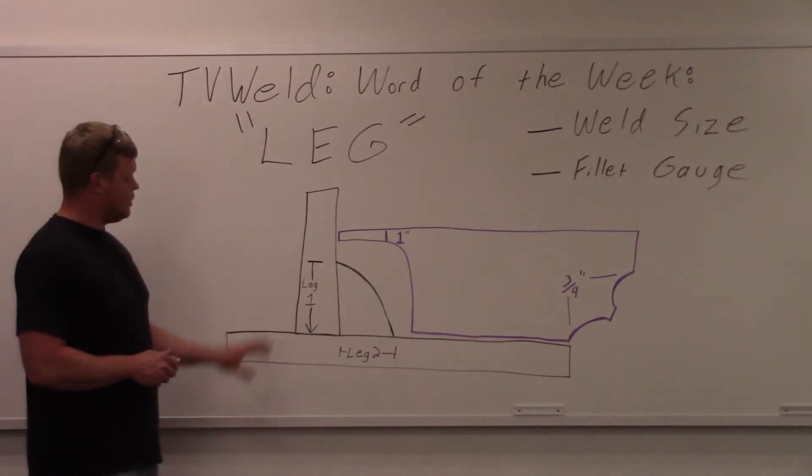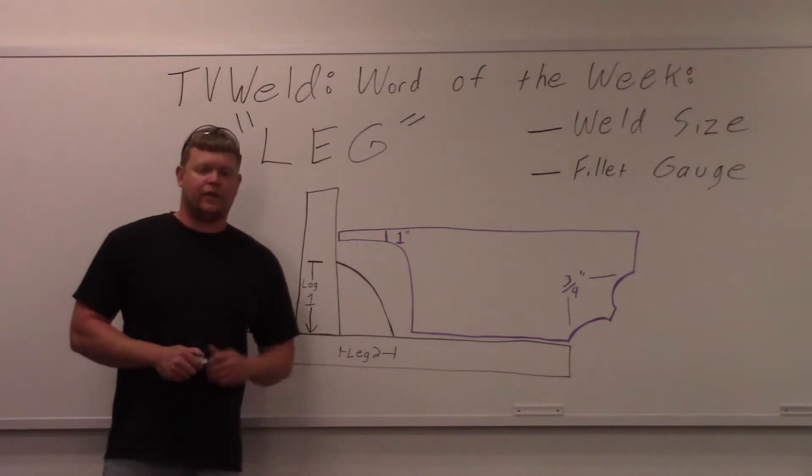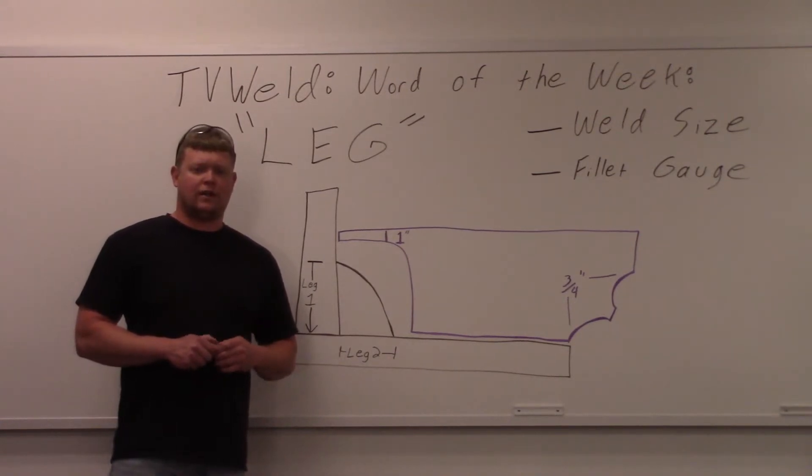The legs on the illustration here are actually uneven legs. I did that on purpose because we're going to actually measure a fillet weld that we did that has uneven legs so you can see how to measure it and see what an uneven leg looks like.